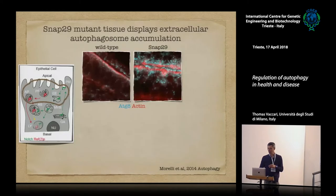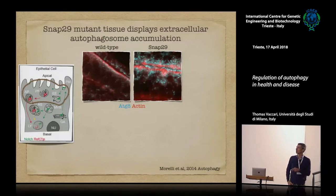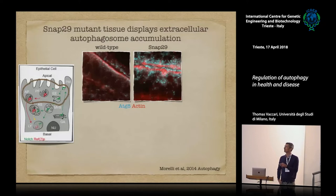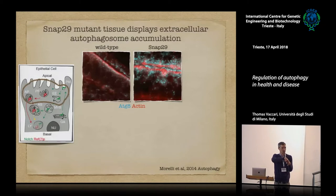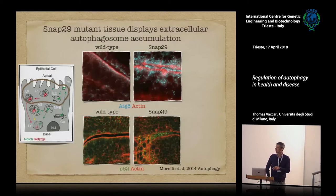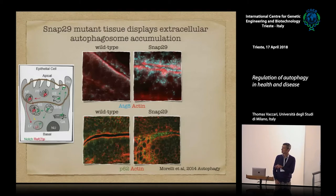There is a second phenotype in SNAP-29 mutants: secretion of autophagosomes to the outside of the cell. Tomograms show a channel opening onto autophagosome-like structures and single-membrane-wrapped material on top of the cell containing internal autophagosomal structures. Immunofluorescence with ATG8 antibody shows huge accumulation of ATG8 within cells and also ATG8 in the lumen between tissue layers, and similarly p62 is present outside in the lumen — confirming extracellular secretion of autophagosomes.